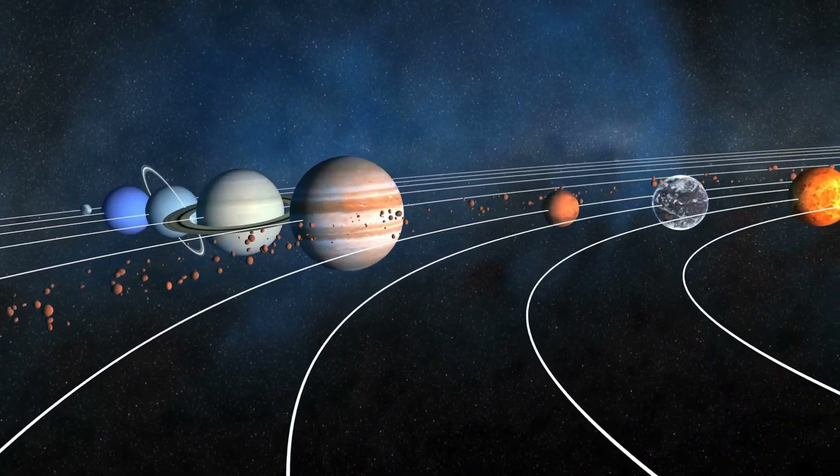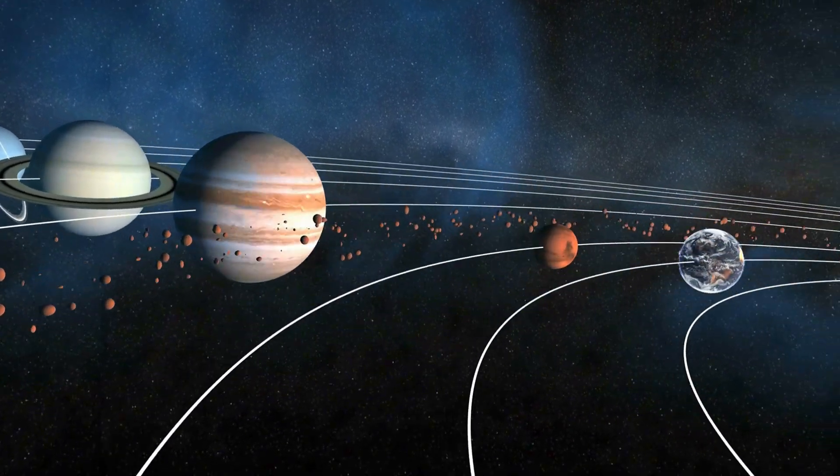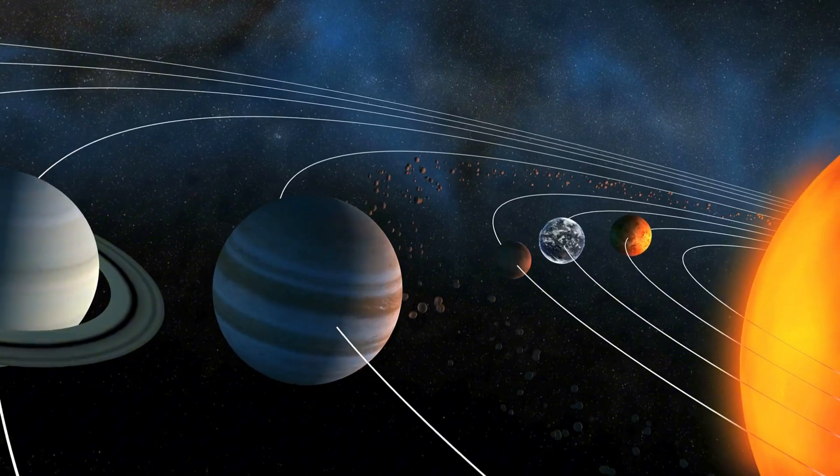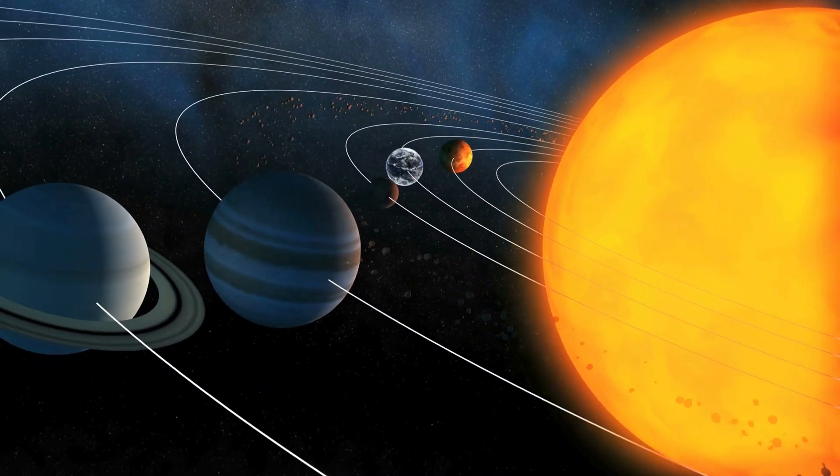Inside this vast halo of frozen debris are dwarf planets like Pluto, Haumea, Makemake, and Eris, alongside countless smaller icy bodies and over a trillion comets.